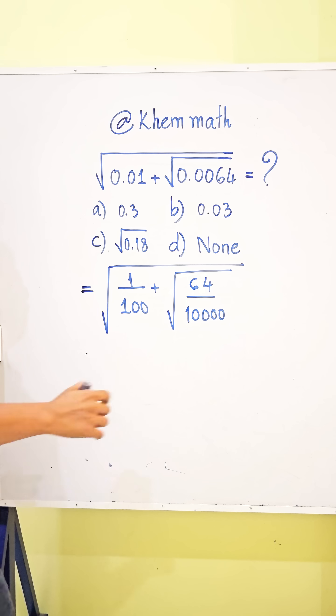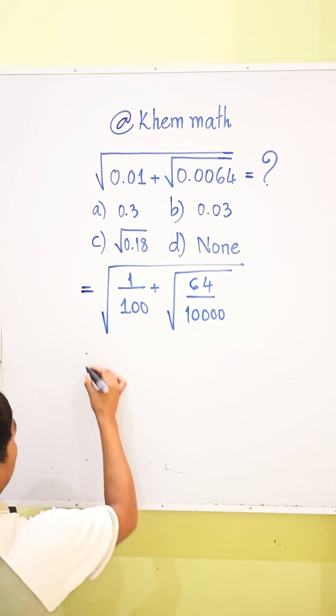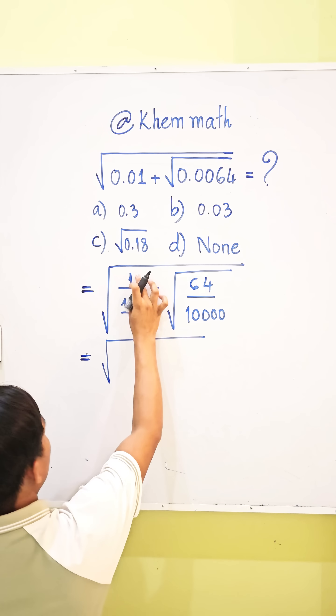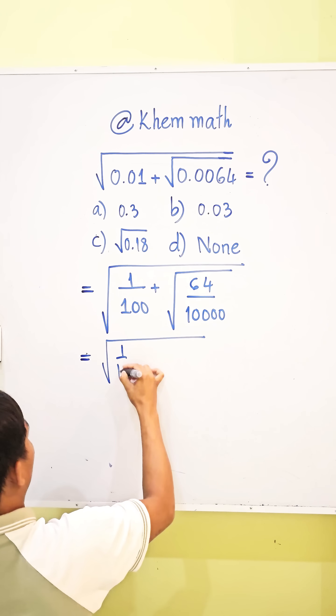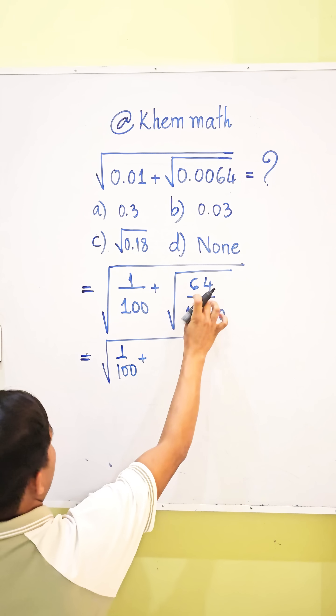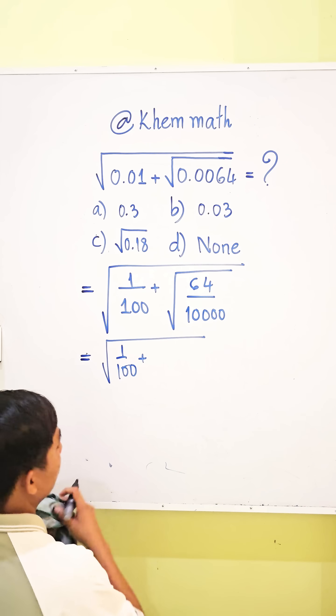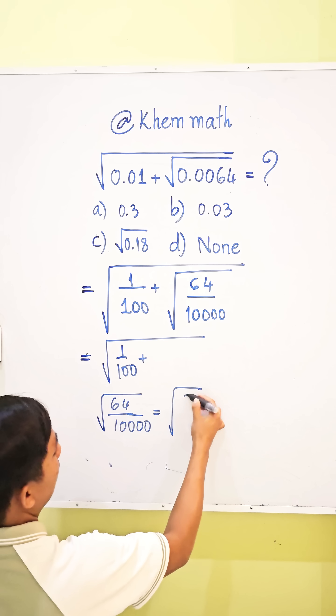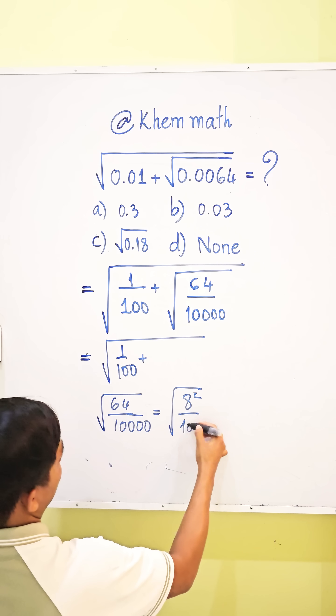So this equals square root of 1 divided by 100 plus... We know that square root of 64 divided by 10,000 equals square root of 8 squared divided by 100 squared.